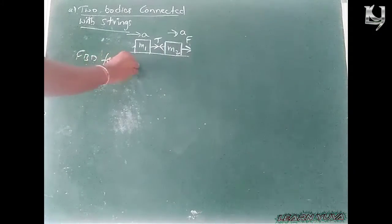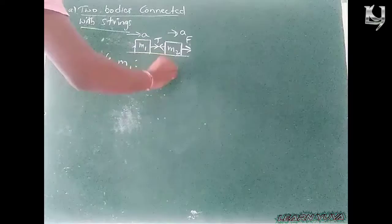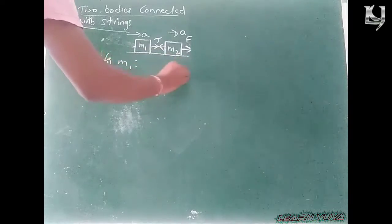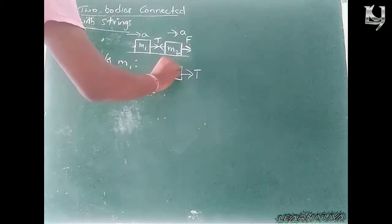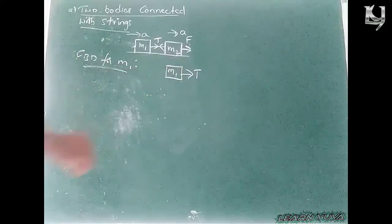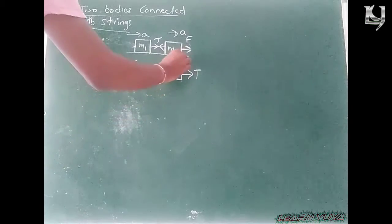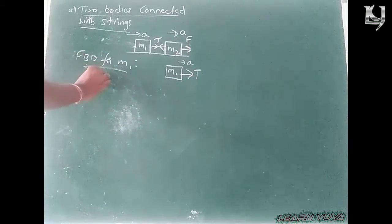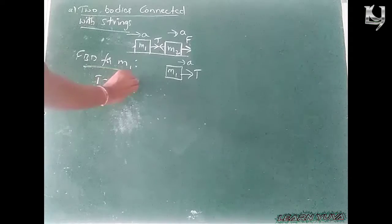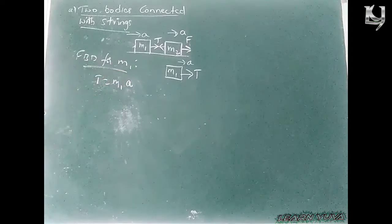Free body diagram for M1: the only force in action is the external tension force. The acceleration is also in this direction, so tension T is equal to M1 into A.